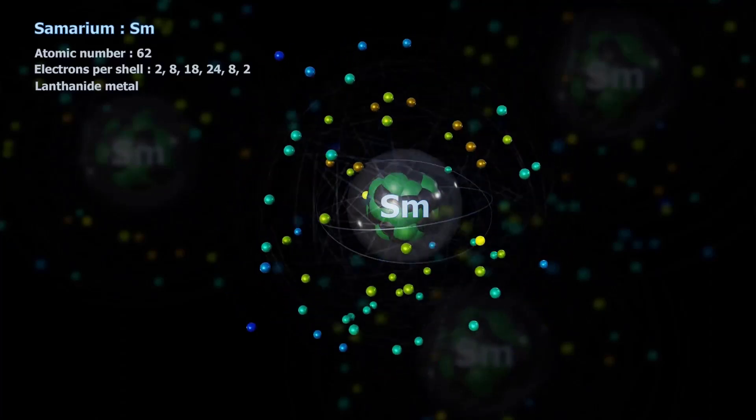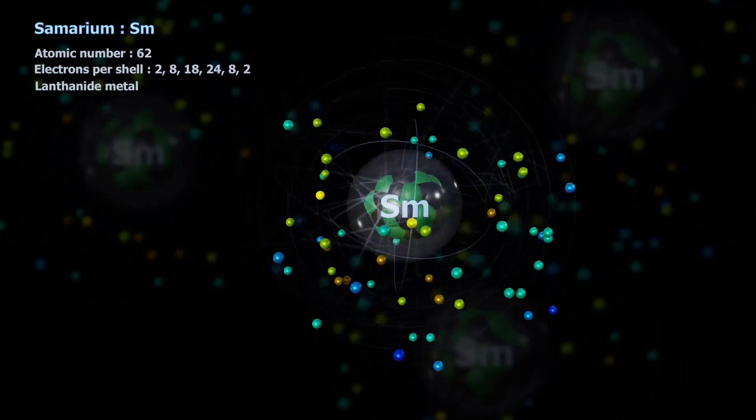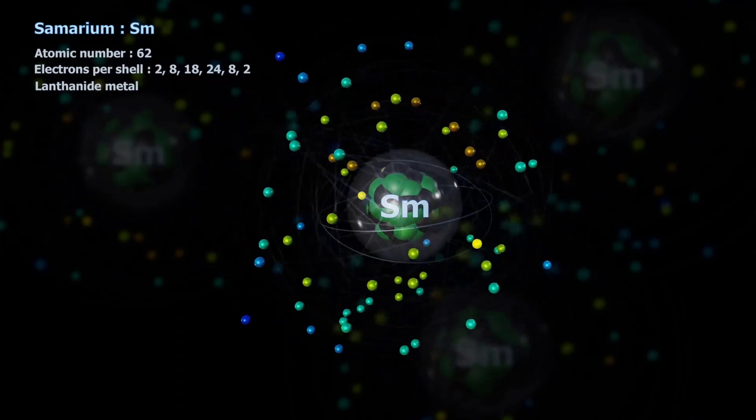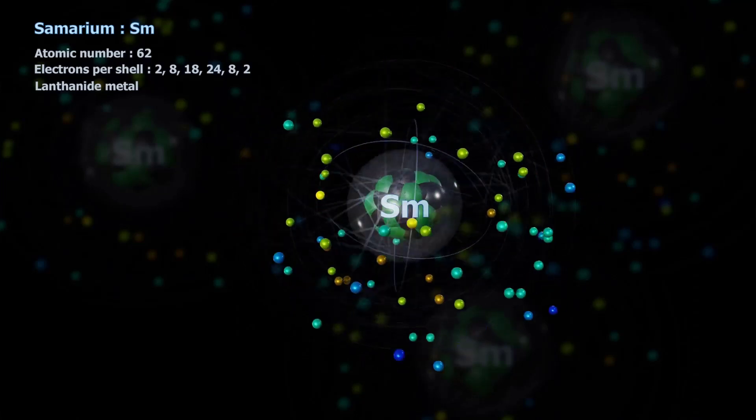Imagine you have a group of tiny magnets called spins that are normally supposed to align like compass needles pointing north. In a conventional magnet, all these spins align neatly.